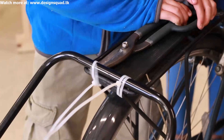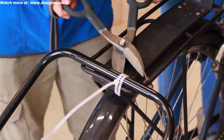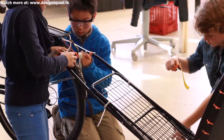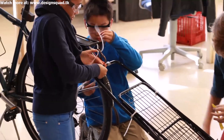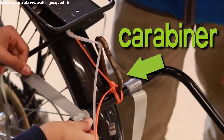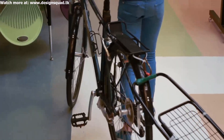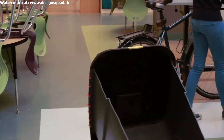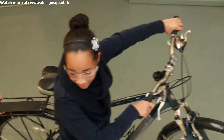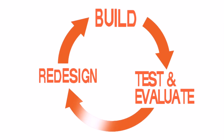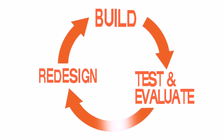Failure is what makes designs better and better each time. So we redesigned the connection using zip ties and a carabiner clip — the kind that's used in climbing. Now the trailer pivots. This is the heart of the design process: the cycle of testing, evaluating, redesigning, and repeating the process until the design is successful.